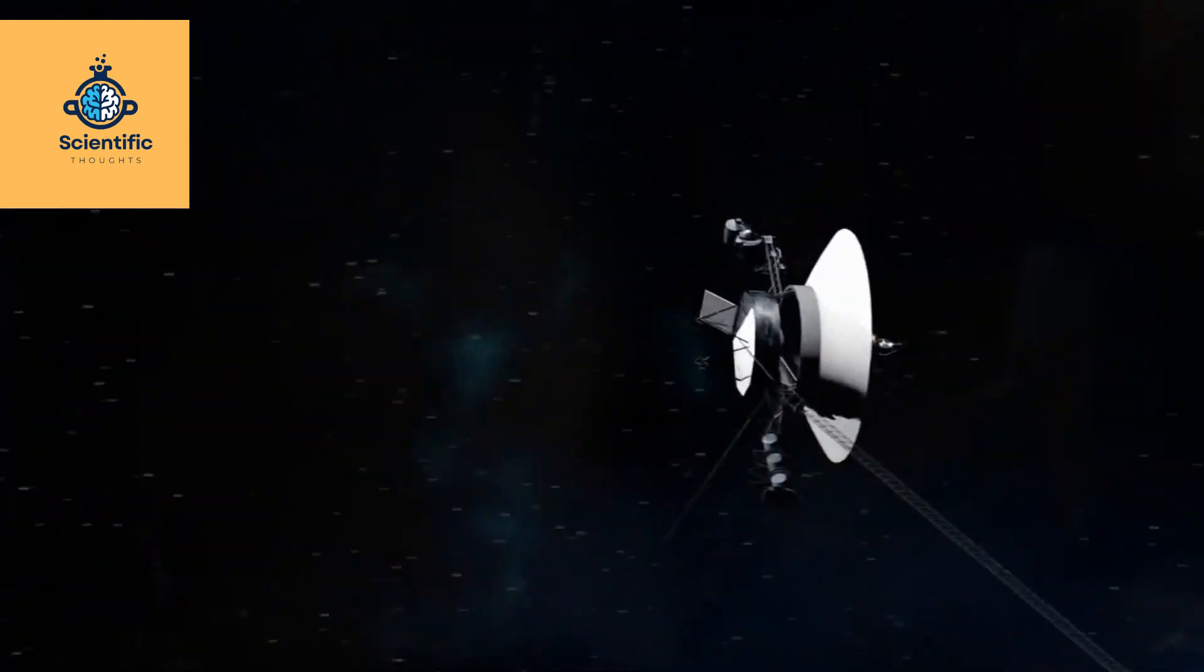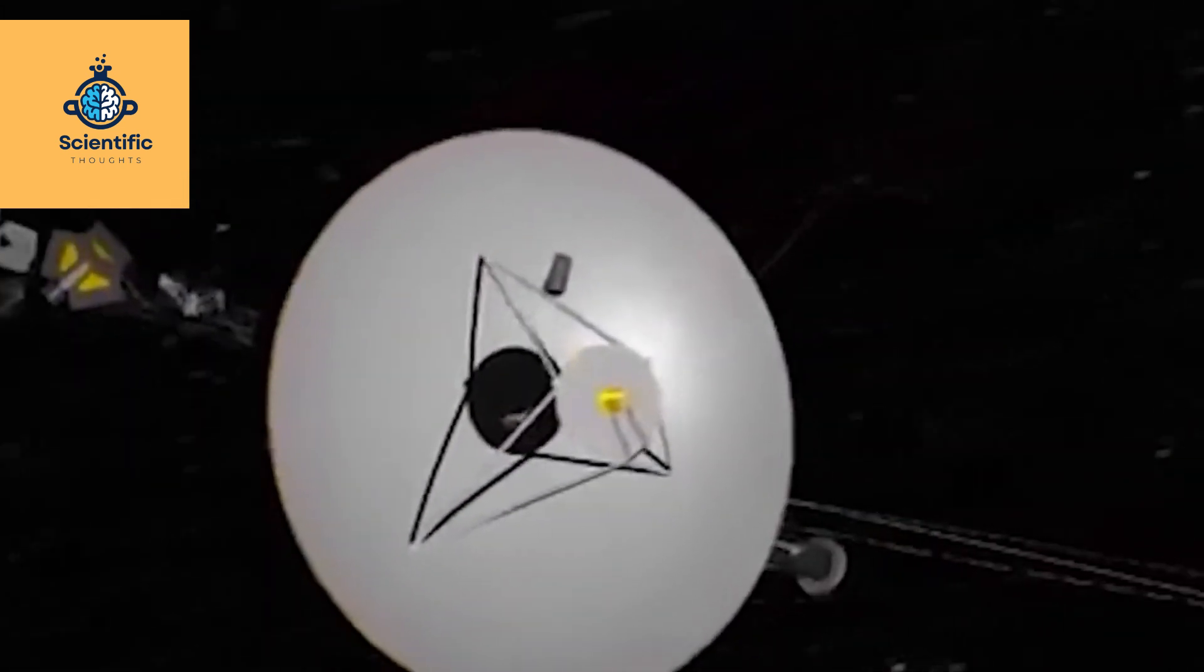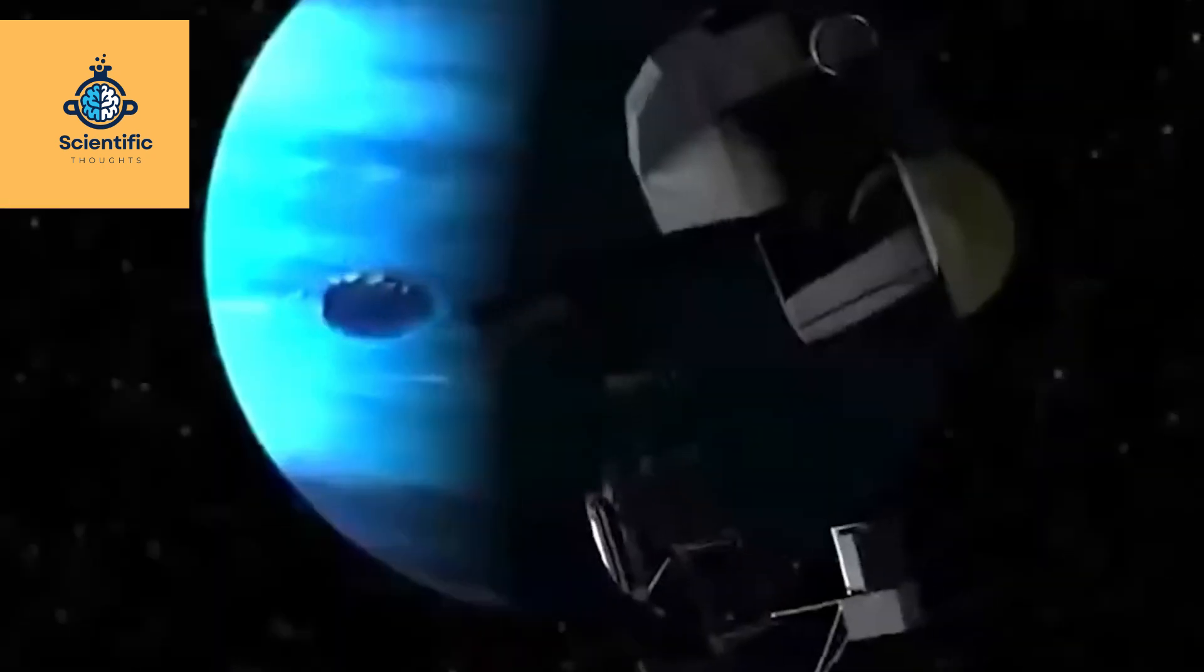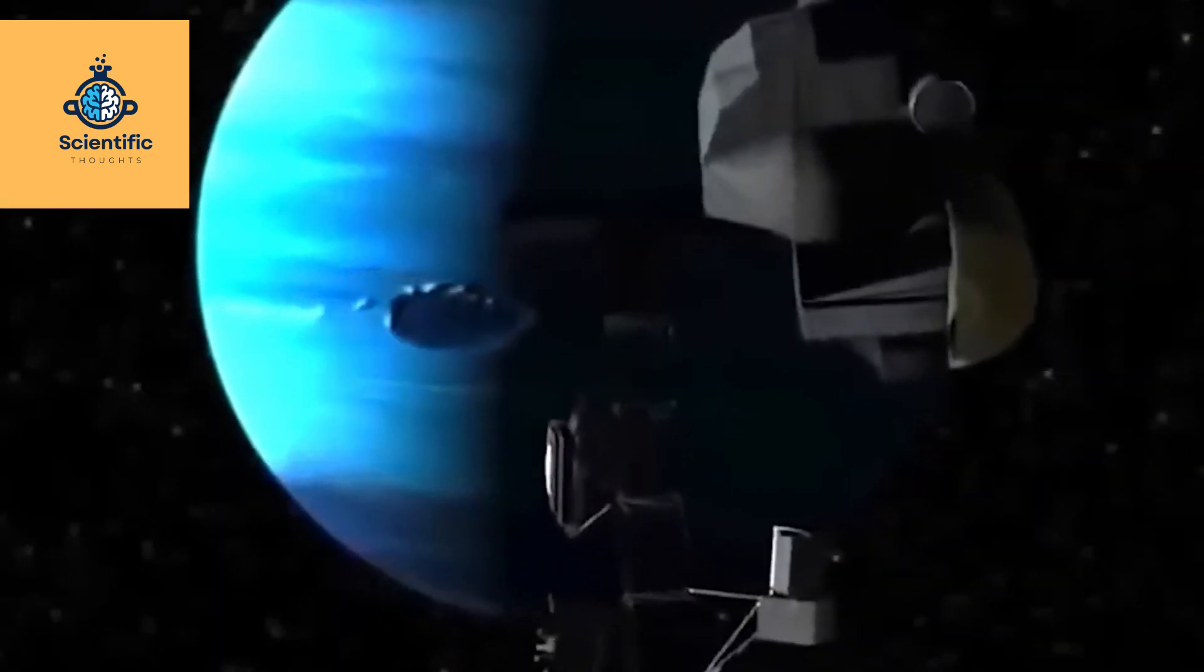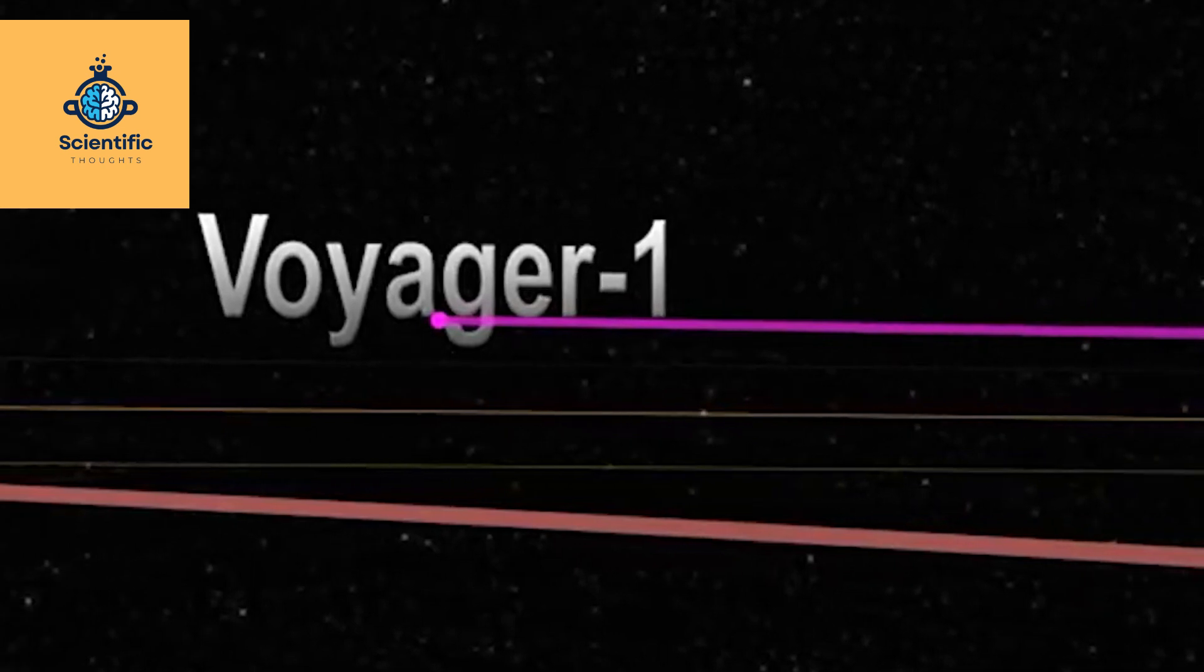Enter the realm of Umbriel, one of Uranus's mysterious moons, where an aura of dark mystique veils a celestial world frozen in the depths of our solar system. Voyager 2's exploration of Umbriel in 1986 unveiled a frozen realm adorned with ancient scars and hidden wonders, inviting humanity to unravel the mysteries of the distant reaches of our solar system.